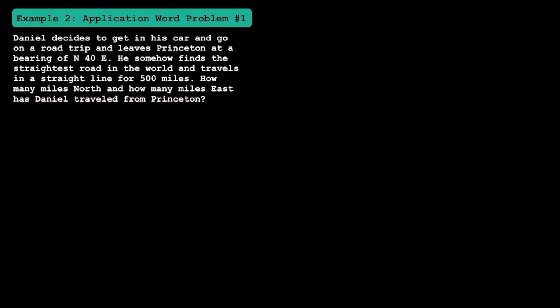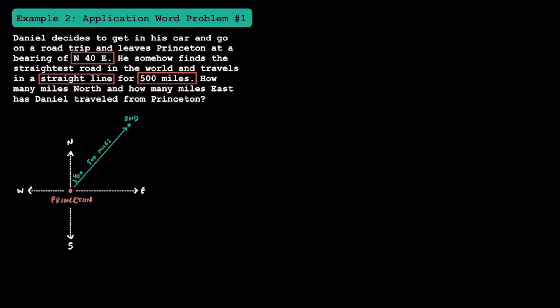For example 2, let's look at our first application word problem. Daniel leaves Princeton at a bearing of north 40 degrees east and travels in a straight line for 500 miles. How many miles north and how many miles east has he traveled? The 500 miles represents the distance. Let's create a sketch: here's Daniel in Princeton with north, south, east, and west. We draw the line at north 40 degrees east, label 500 miles, and since the bearing is 40 degrees, its complement is 50 degrees. We draw a vertical line to create a right triangle.